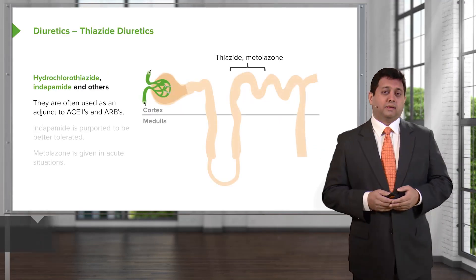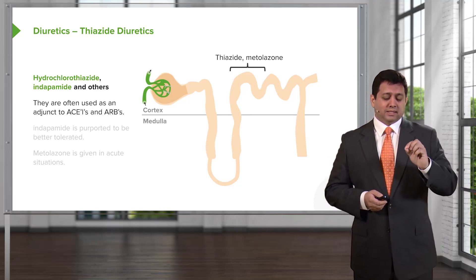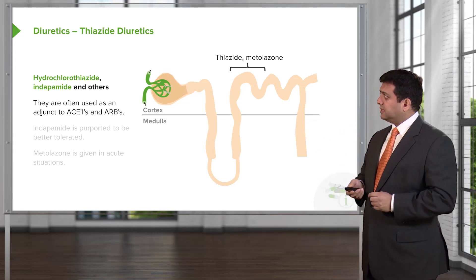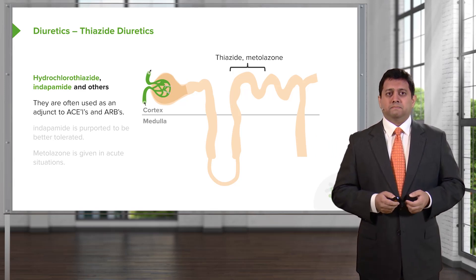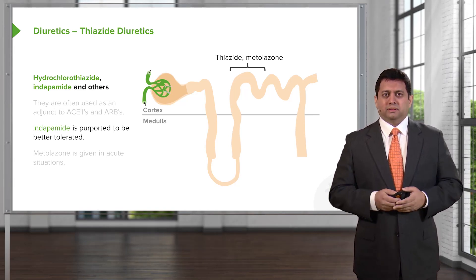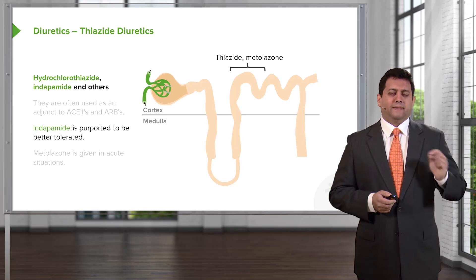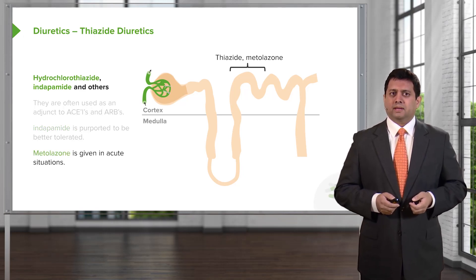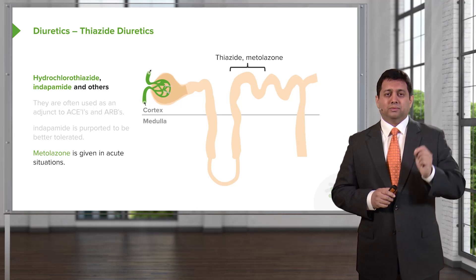The next class are the thiazide diuretics. These are a little bit weaker than the loop diuretics, but used more often. We sometimes combine them inside the pill with ACE inhibitors and ARBs. The most commonly used in North America is hydrochlorothiazide; in the UK and Europe it's indapamide. Indapamide is purported to be better tolerated. There is a third thiazide diuretic called metolazone, which we'll mention later when we talk about heart failure.